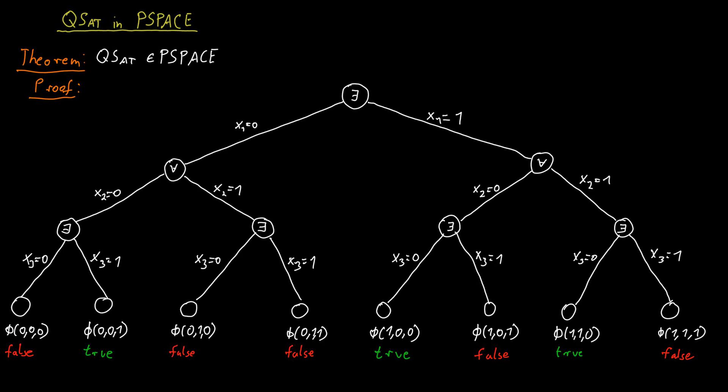Consider one level above the leaves, at a node belonging to the existential player (when the number of variables is odd). Alice has a winning strategy at this node if at least one of her two children is true. If both children are false, then no matter what she does the result is false. So the node's value is true if at least one child is true, and false if both children are false.